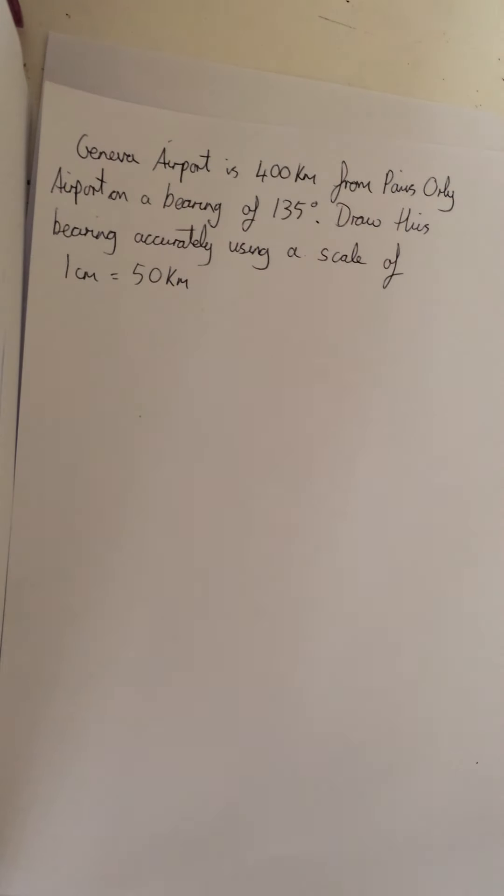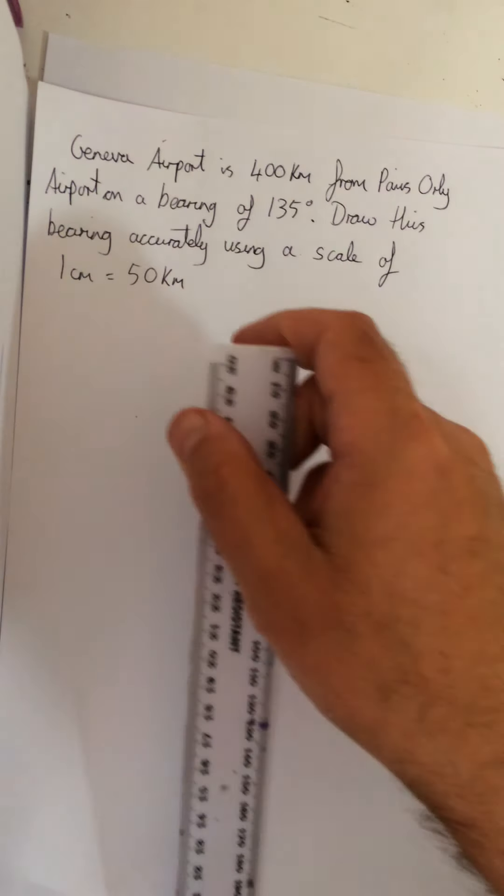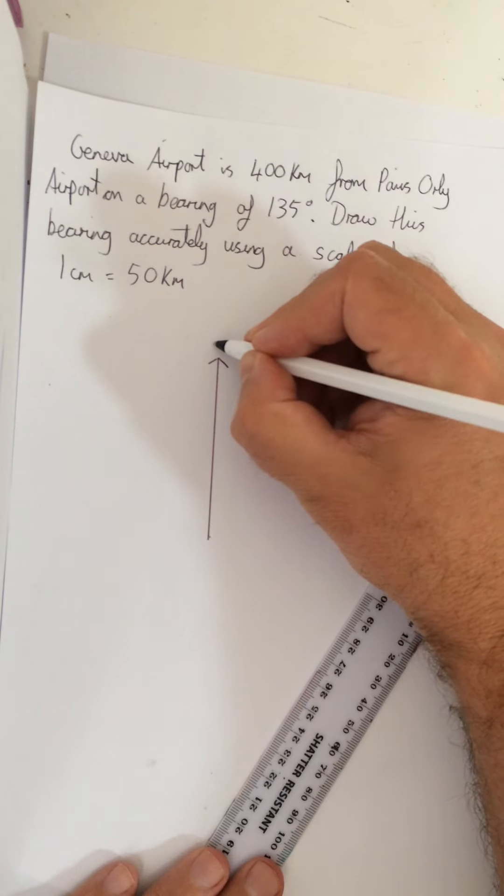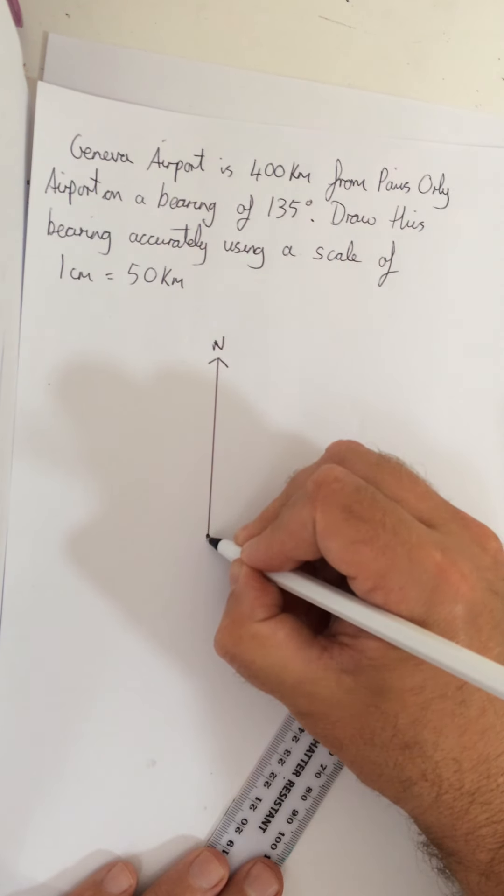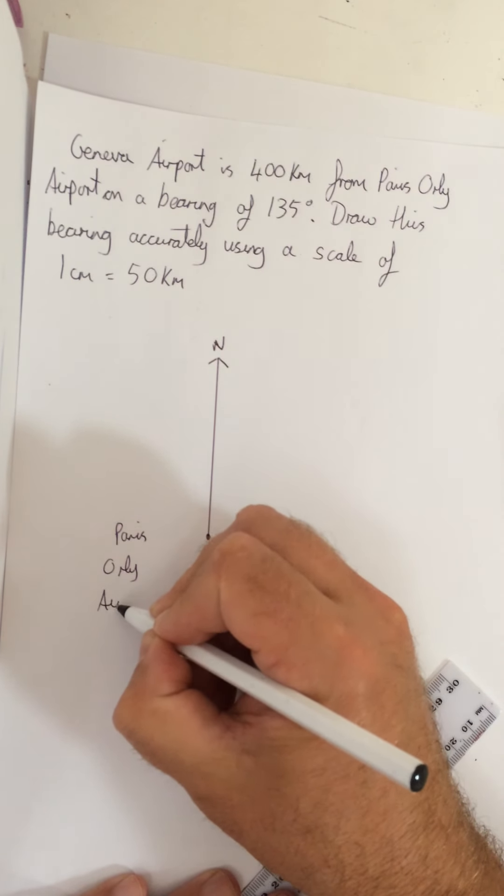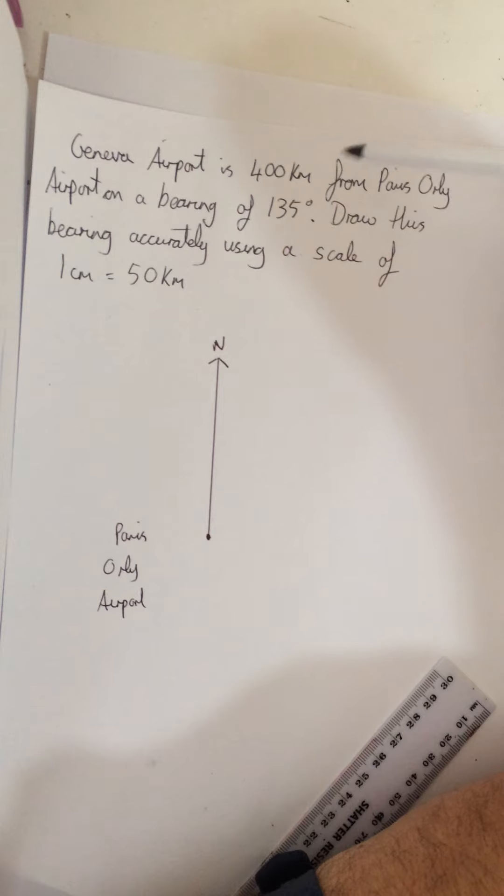So Geneva airport is 400 kilometers from Paris Orly airport on a bearing of 135 degrees. Draw this bearing accurately using a scale of one centimeter to 50 kilometers. So what we're going to be doing, the sort of work we'll be doing, will involve scales and bearings really. So again, our starting point is to find our north. That's our north. And this point here will therefore be our Paris Orly airport. So this is our point here. This is our airport.